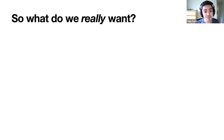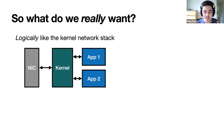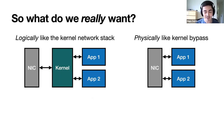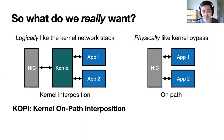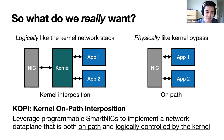So what do we really want? We want something that is logically like the kernel network stack while also being physically like kernel bypass. We want to be able to have kernel interposition without reintroducing data movement — something that is on-path. Our proposal is a new OS architecture that we call COPI, which stands for Kernel On-Path Interposition. The idea is to leverage these new programmable smart NICs to implement a network data plane that is both on-path while also being logically controlled by the kernel.